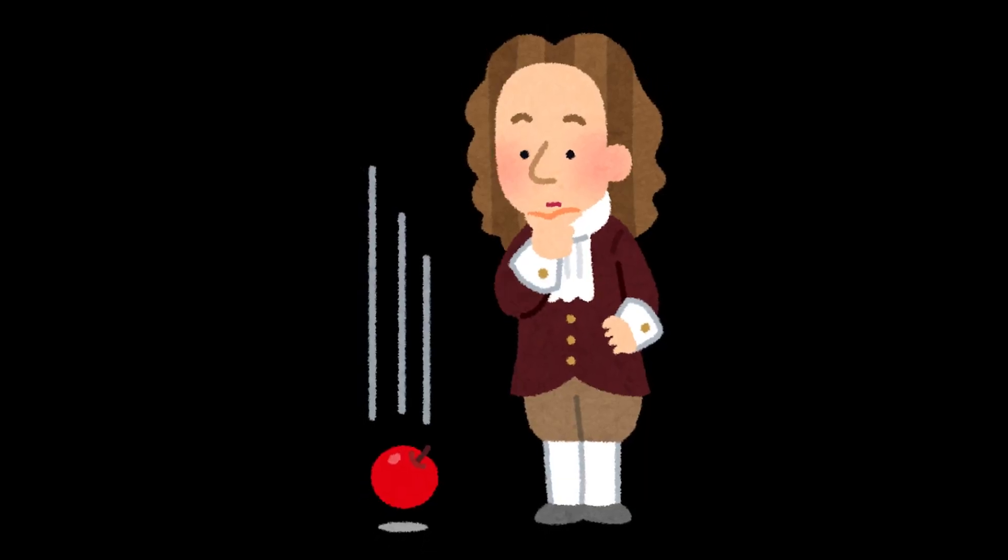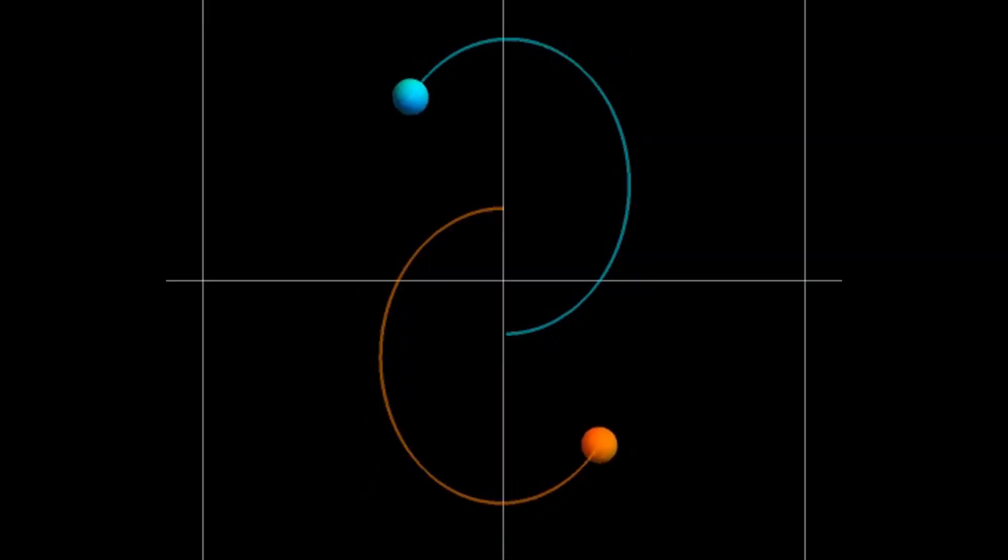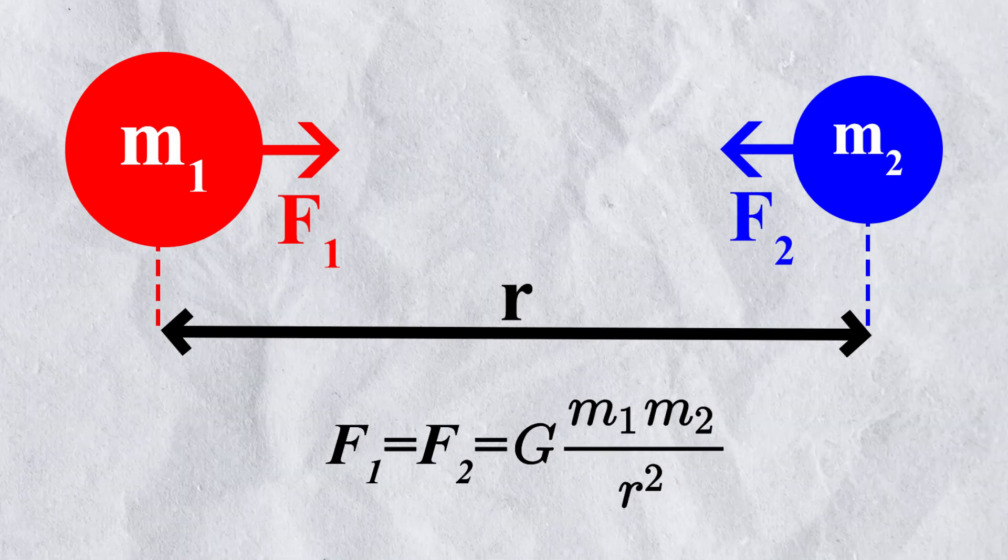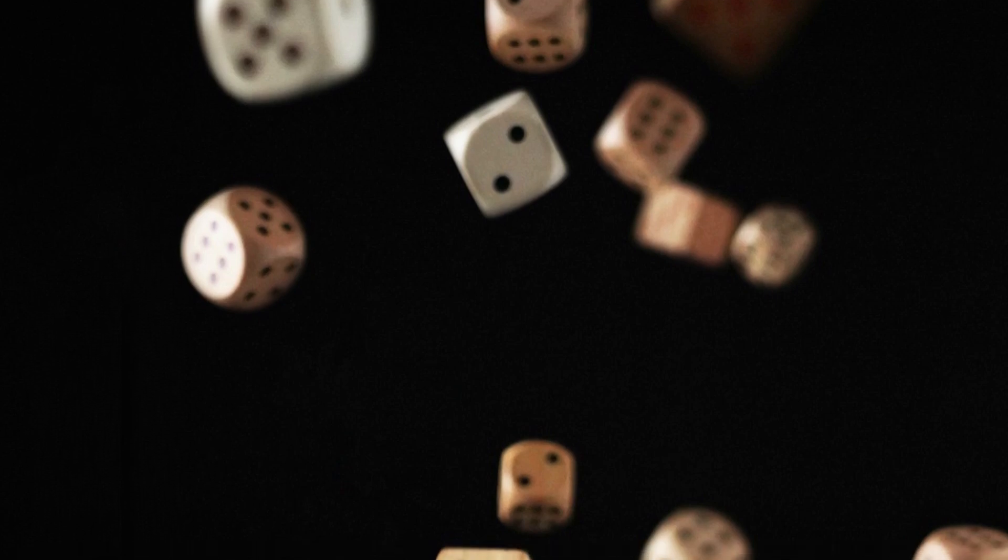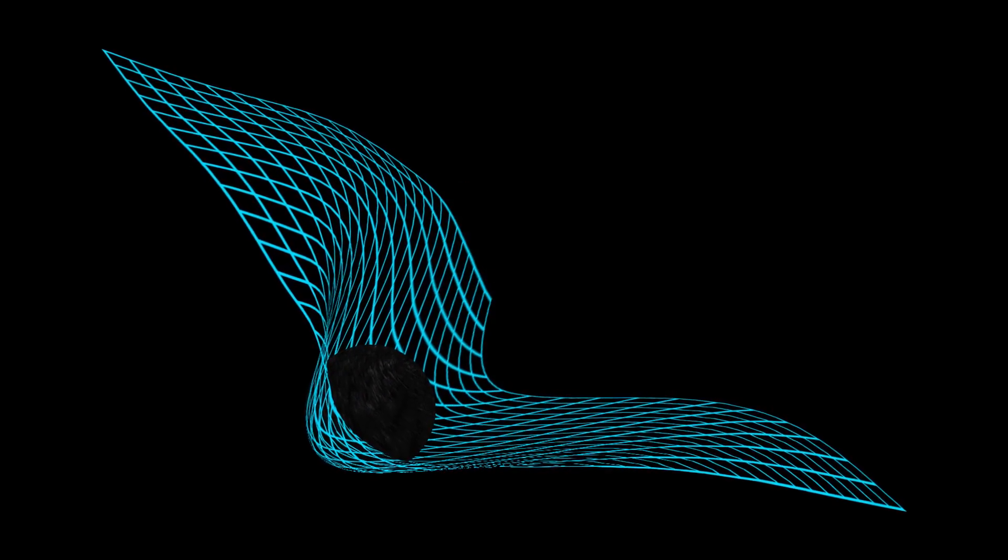When Isaac Newton spoke of gravity, he described it as being caused by massive objects attracting other objects. The more refined theory of relativity by Albert Einstein revisits this principle. As a good analogy, you can think of gravity as the effect of massive objects causing a well in the fabric of space-time.